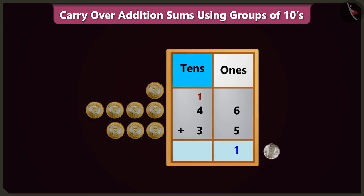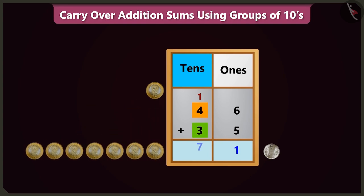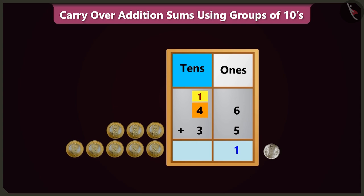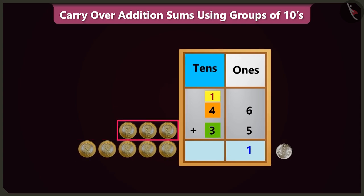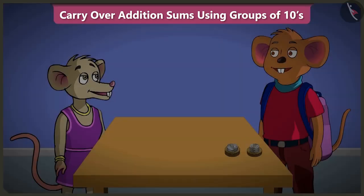Now in the tens box, adding 4 and 3 will make 7. Hey Chi Chi, you did not count the carryover written in the tens box! Oh, I made a mistake. Adding the carryover 1 in the tens box to 4 makes 5, and adding 5 and 3 makes 8. The total amount is 81. Very good, Chi Chi — but while doing addition, don't forget to count the carryover number as well! I will definitely remember. You also please remember this.